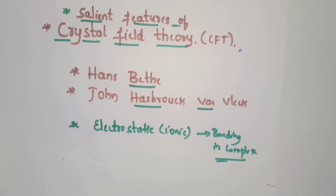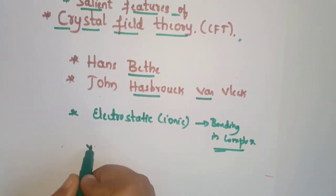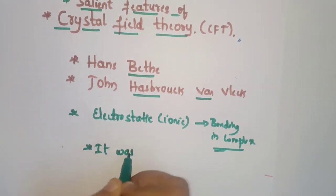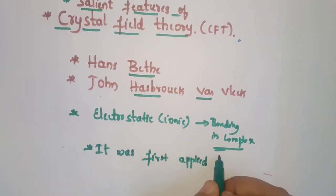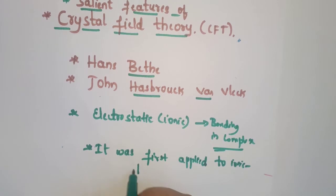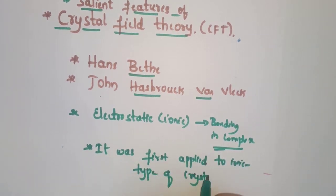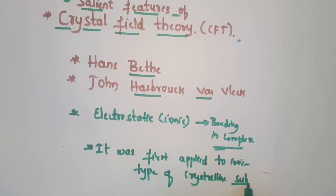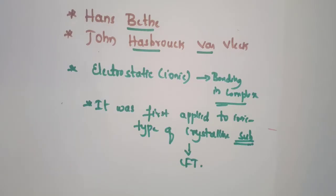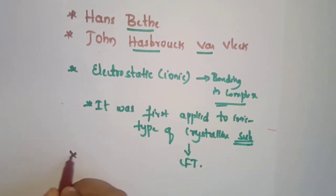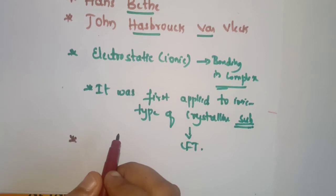This theory is called Crystal Field Theory because it was first applied to ionic types of crystalline substances. CFT has been widely used by chemists to explain the behavior of transition metal compounds.